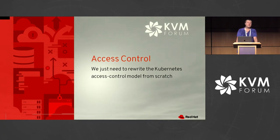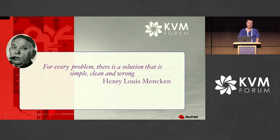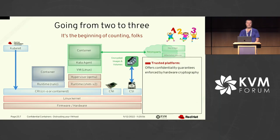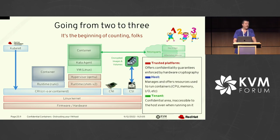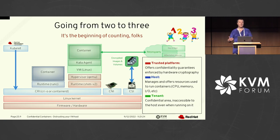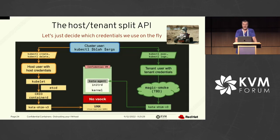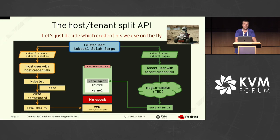What about access control? The problem is we need to rewrite most of the Kubernetes access control mechanisms from scratch. To quote H.L. Mencken: "For every problem there is a solution that is simple, clean, and wrong." And the authentication in Kubernetes is that simple, clean, and wrong thing. Going from two to three parties in the diagram means you need credentials that go one way or the other depending on what command you're applying. It's actually worse — many APIs mix stuff that goes in the guest or in the host. For example, reading logs used to be done from the host, but now you want to read logs only if you have tenant credentials. Hence, we need a new host-tenant split API to decide which credentials to apply, and switch between an encrypted protocol on the right or the usual protocol going to the host on the left.